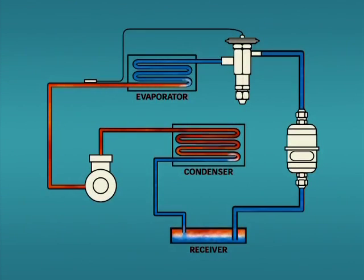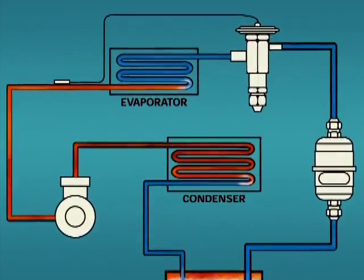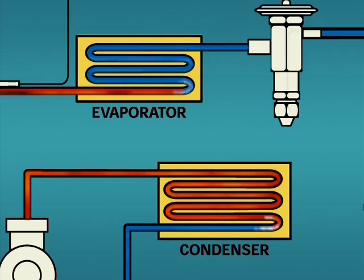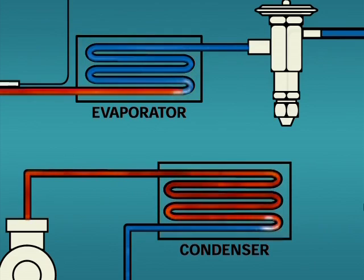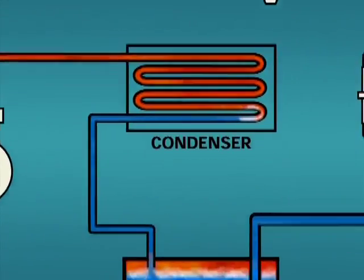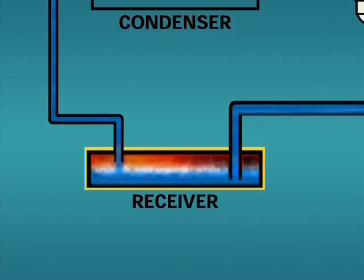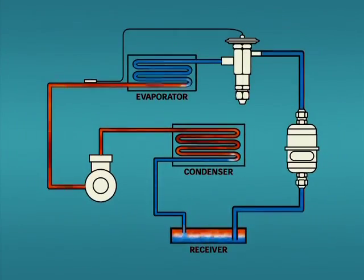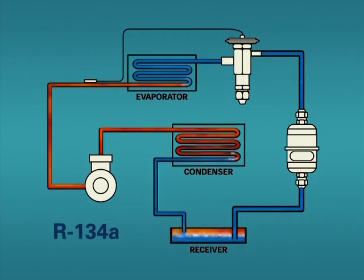Saturated refrigerant must exist in two places of a normal operating system: in the evaporator and in the condenser. This is due to the fact that the refrigerant becomes a liquid and vapor mixture in the evaporator and condenser. Anytime you have a liquid and vapor refrigerant mixture, the refrigerant will be at saturation. For systems with a receiver, saturated refrigerant will also be found at the liquid vapor interface at the refrigerant level in the receiver. For our example, we will use R134A.